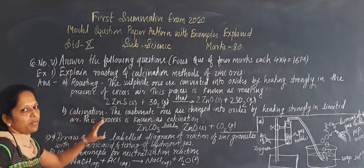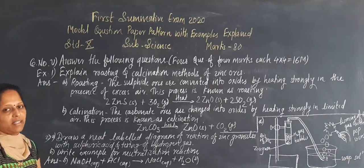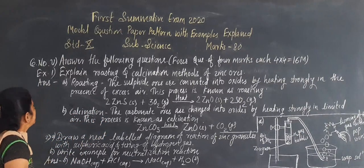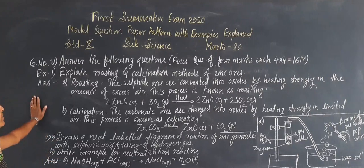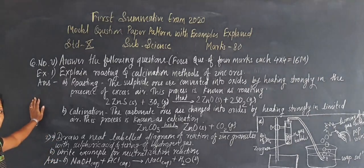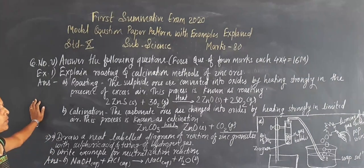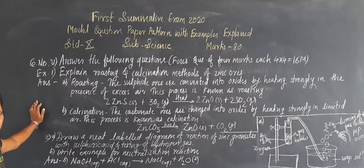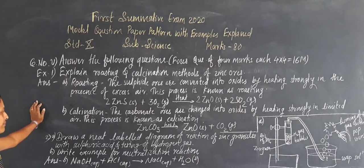This carries two marks for each — for roasting and calcination with their equations when written. This is the example for question number one. For the answer, it can be seven to eight sentences each, and it has four marks for each question. Like this, there are four questions. So the second question we are going to see next, for four marks.